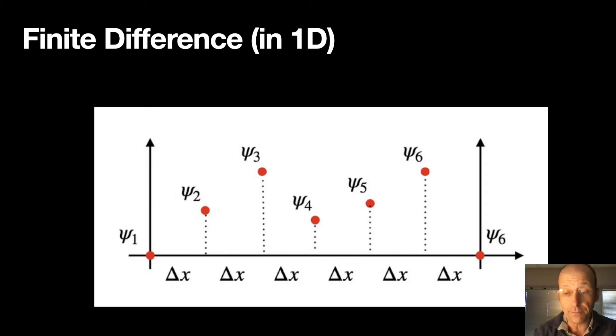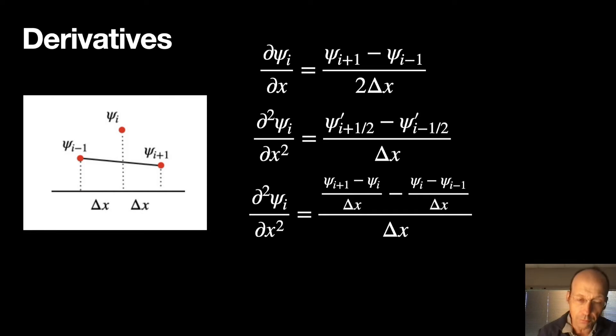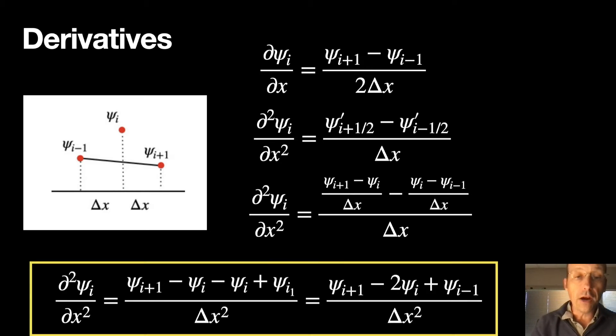With that, we can define the derivative, the second derivative, with finite difference. Basically, the first derivative, we just take the slope between these two points, and then the second derivative is the slope of the slope, and we get this very important thing.